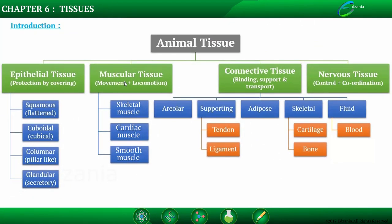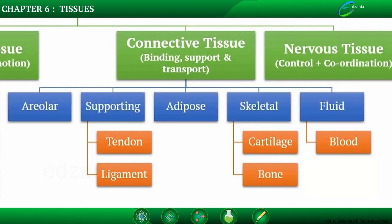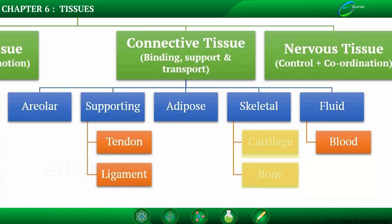Connective tissue provides a transport system within our body for oxygen and other important substances, as well as binding and support. Based on function, connective tissue is divided into five types: areolar, supporting, adipose, skeletal, and fluid. Supporting connective tissue is divided into tendon and ligament. Skeletal connective tissue is divided into cartilage and bone. Fluid connective tissue includes blood.